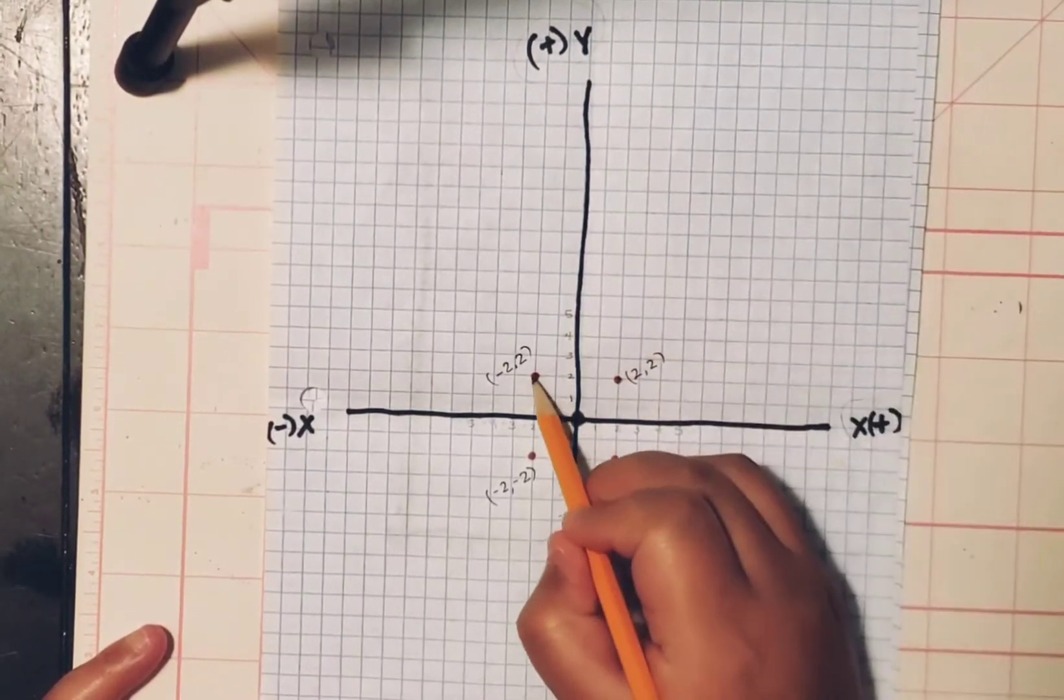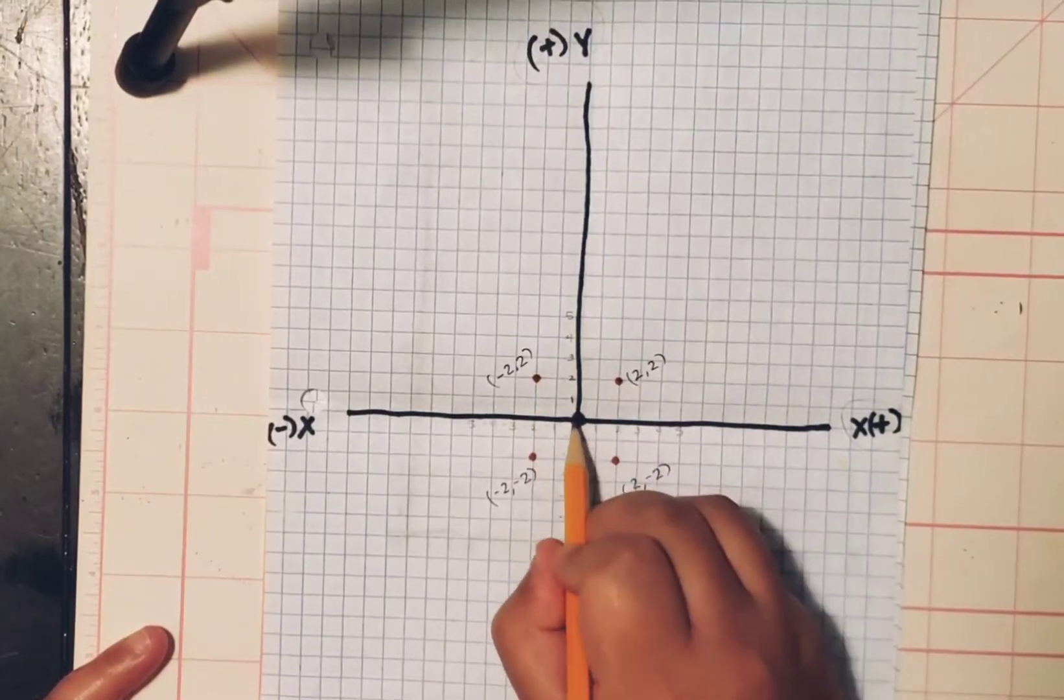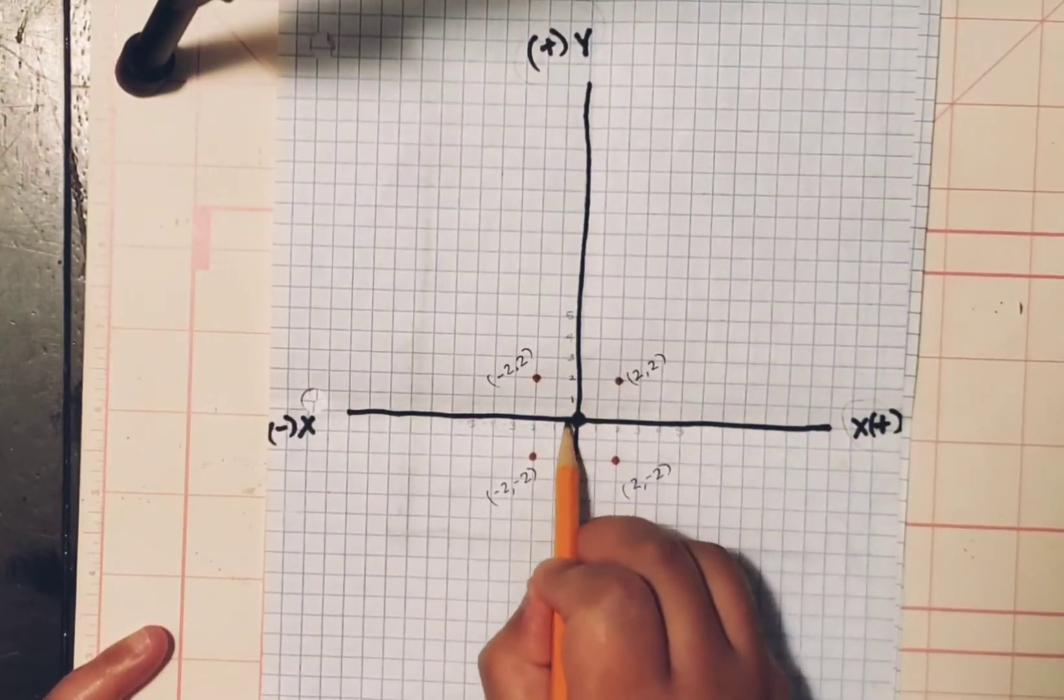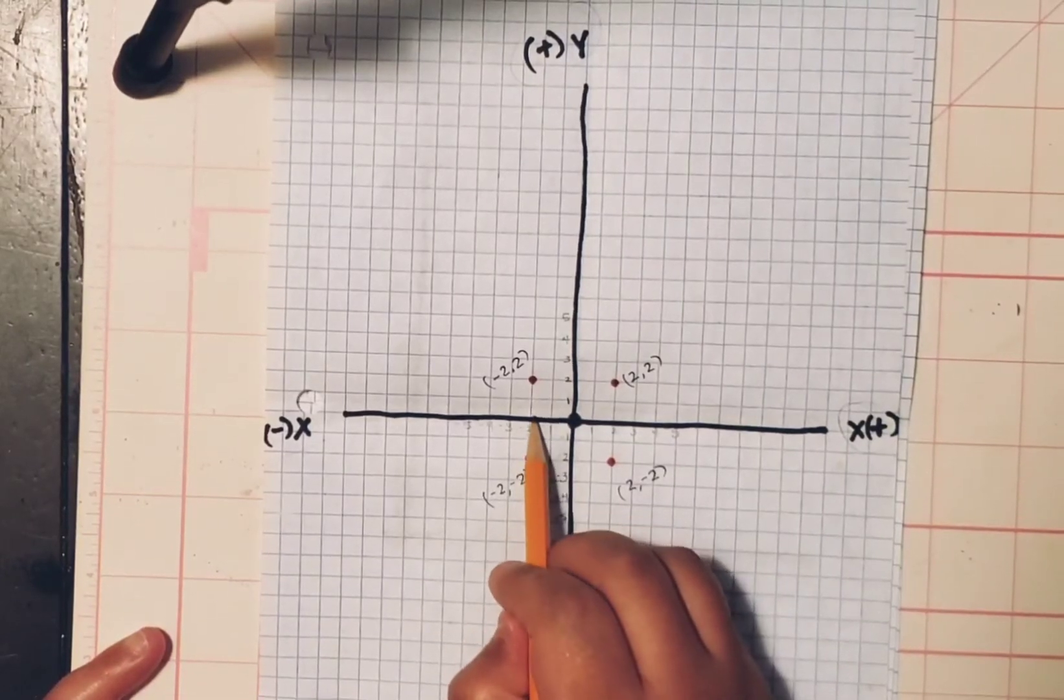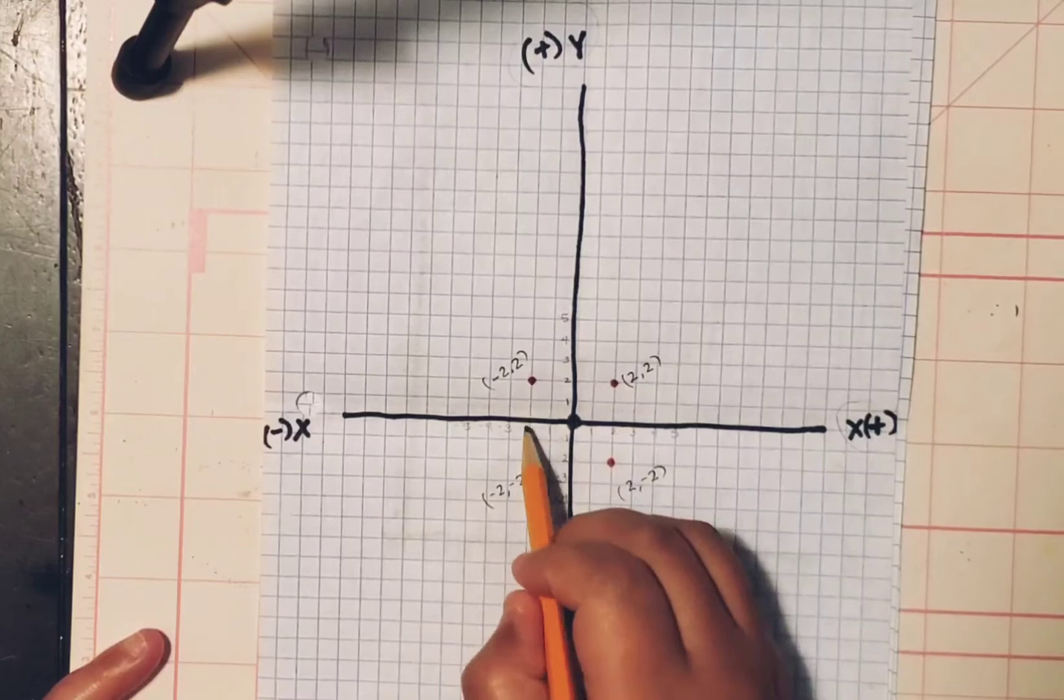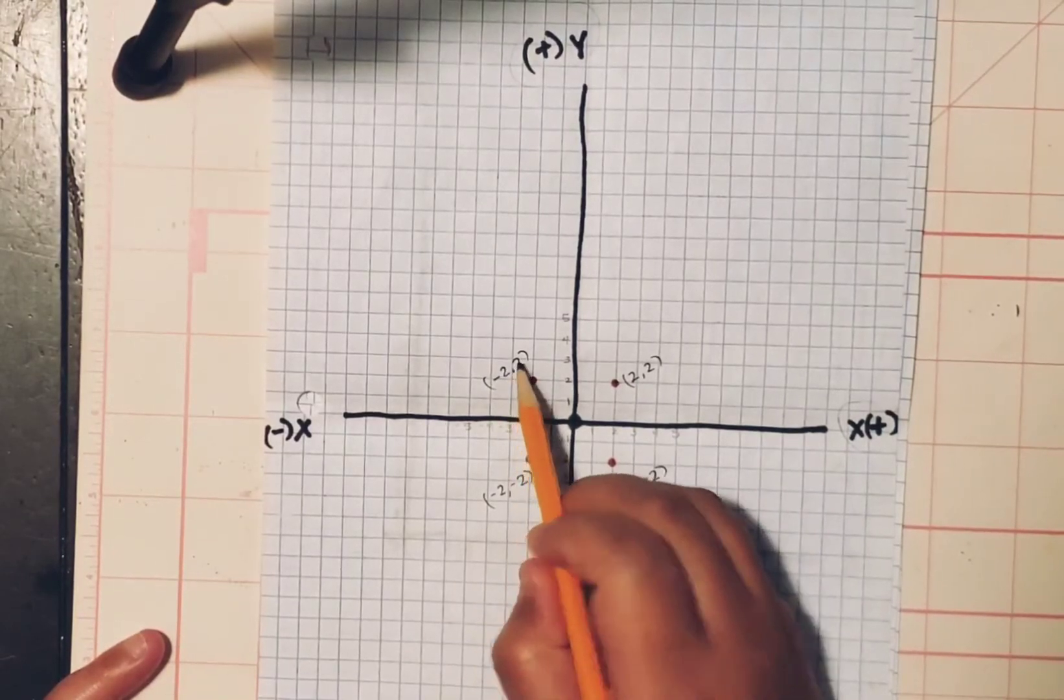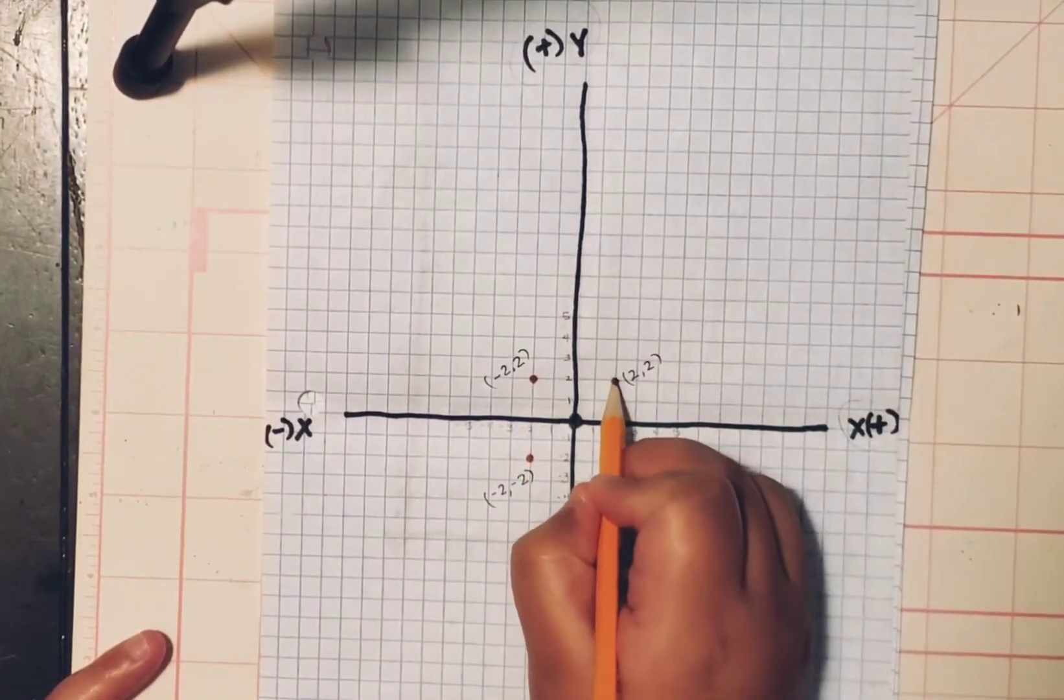Then we continue, if we want to do this point over here. Again, you start on your X, we move two, which is a negative two. And we move up Y, which is a positive two. So if that one is negative two to positive two, then we connect them.